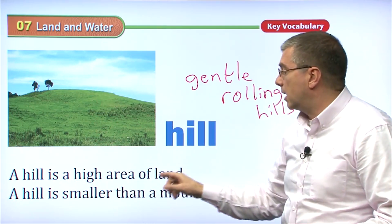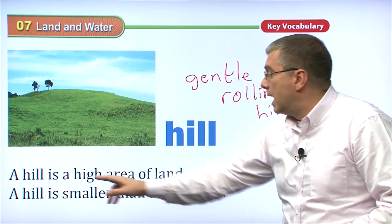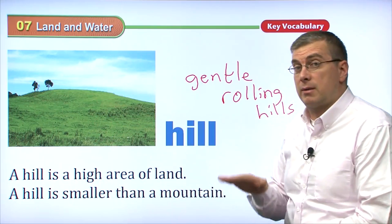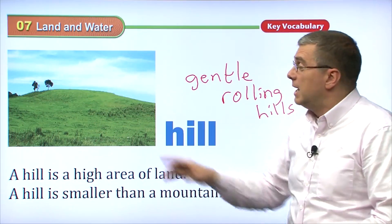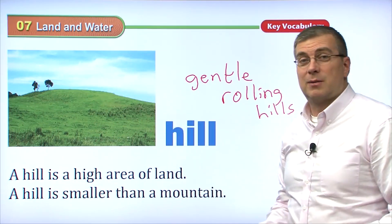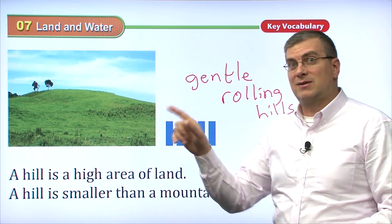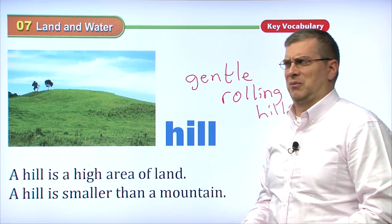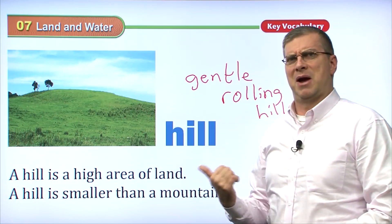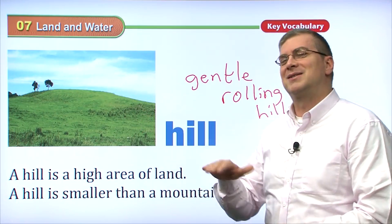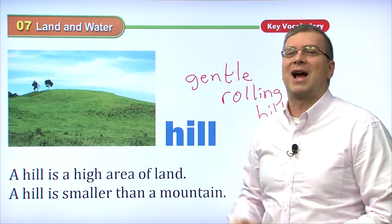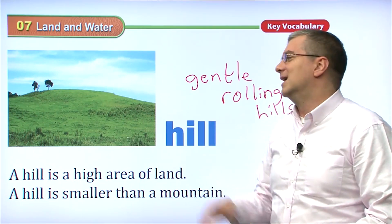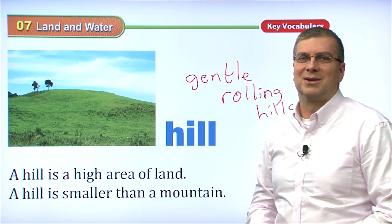A hill is a higher area of land, and of course a hill is smaller than a mountain. If you look at something and say, 'Wow, that's a mountain,' somebody might say, 'You call that a mountain? That's a hill!' Because they don't think it's very high. So it's a hill.